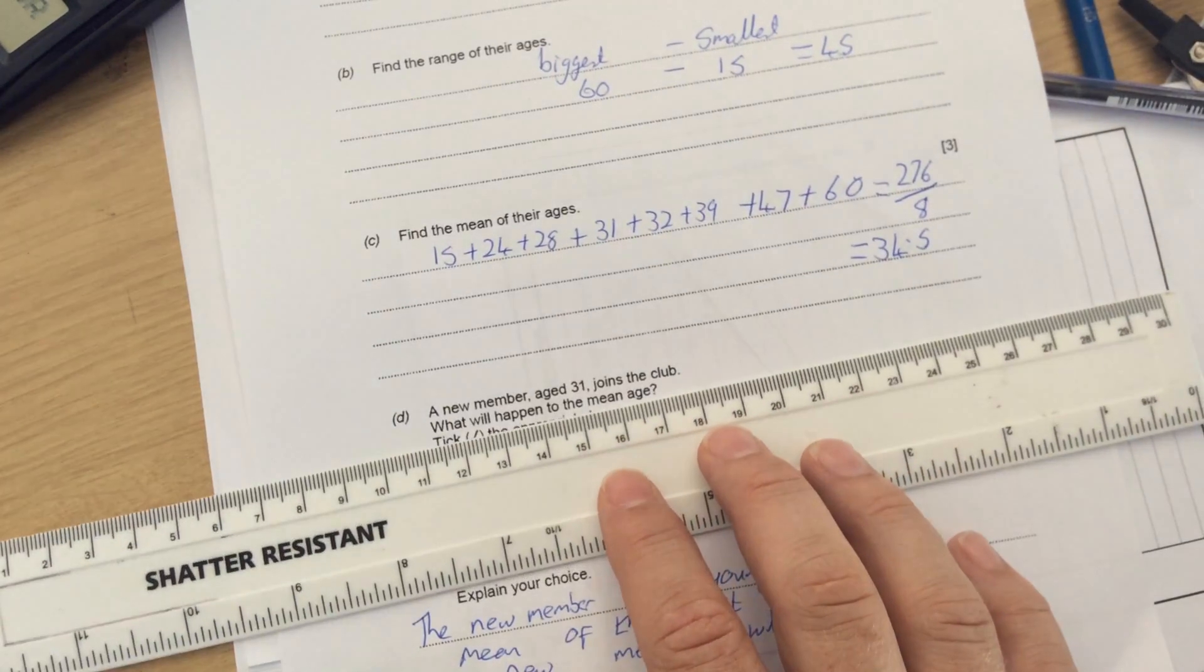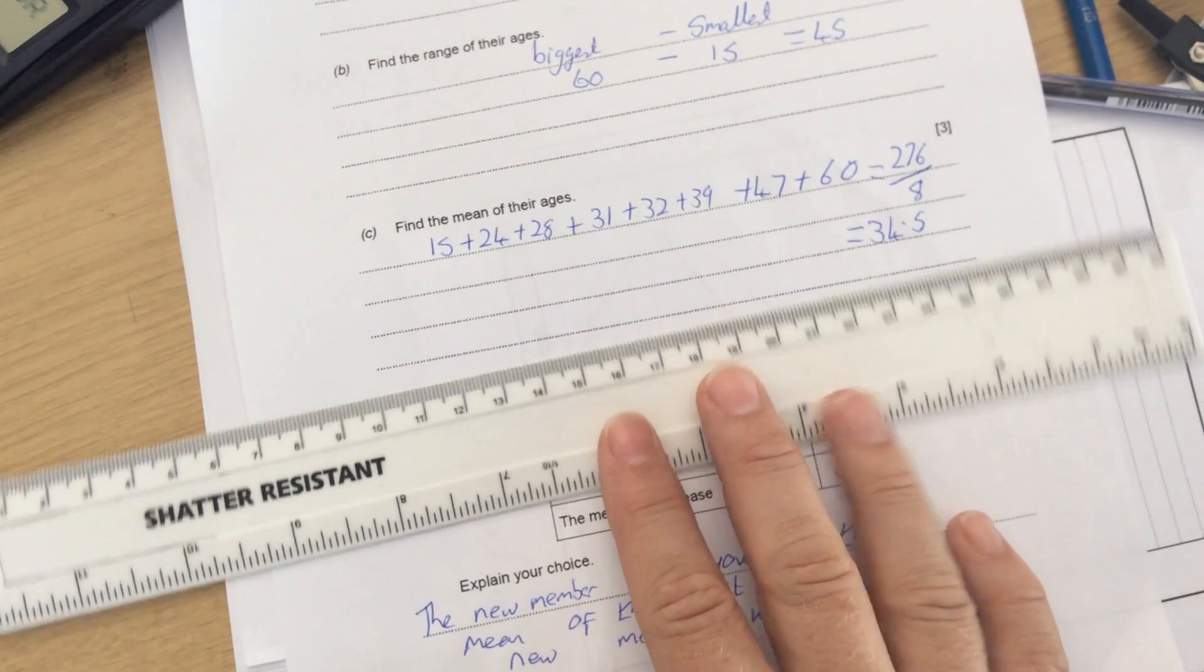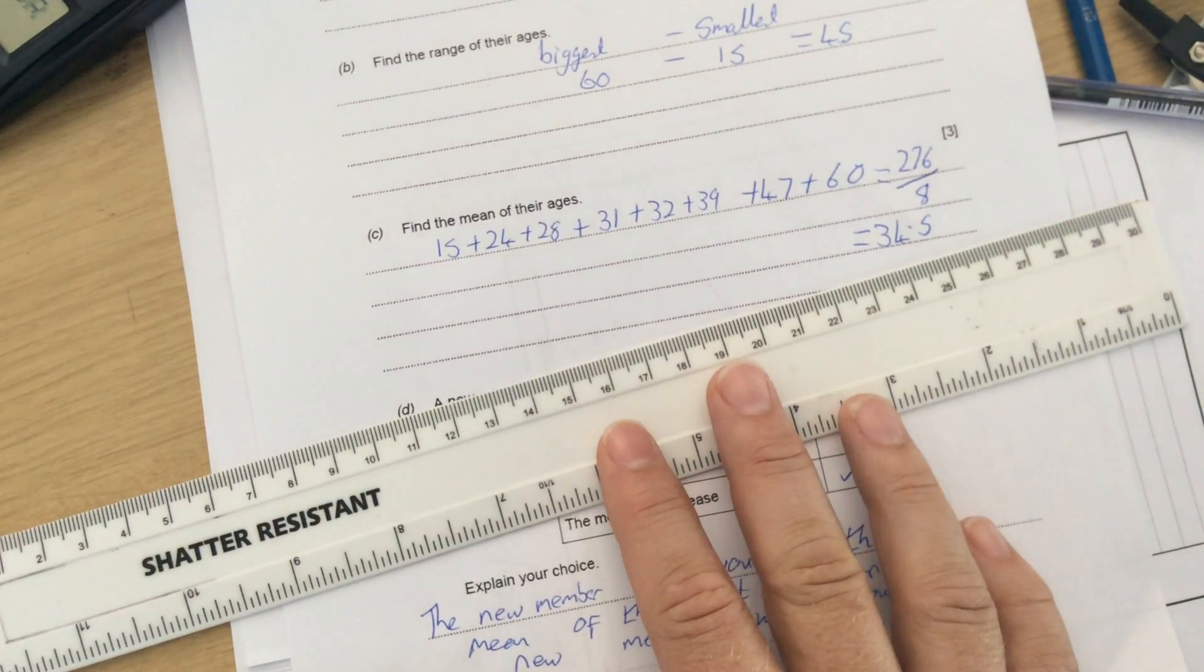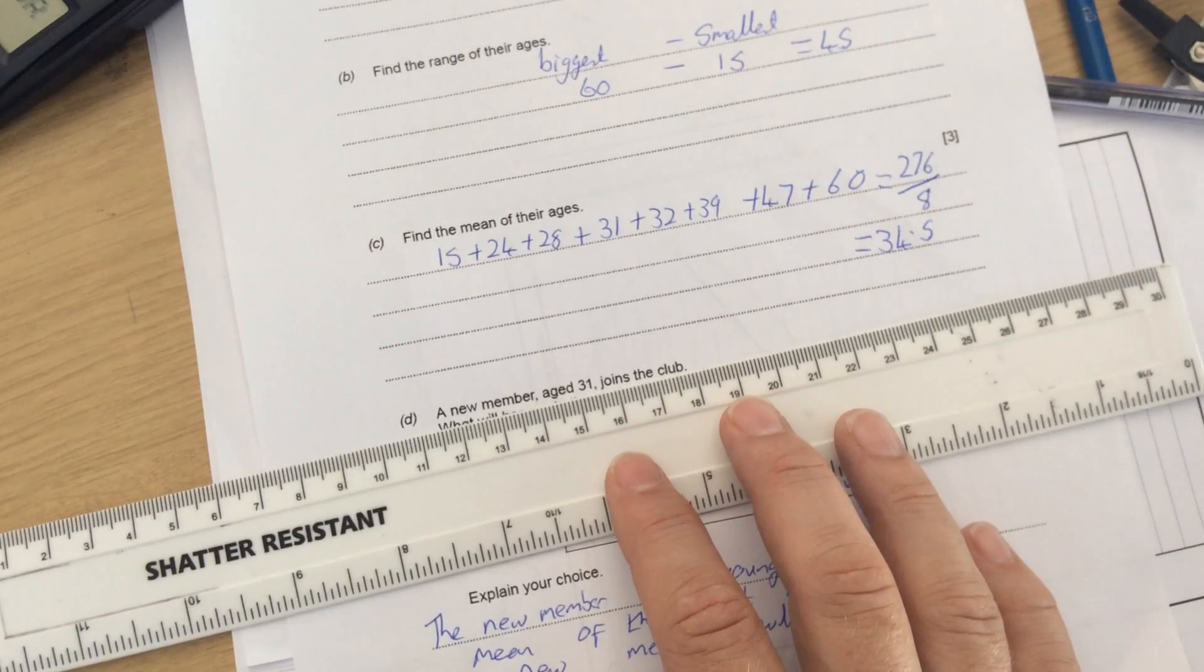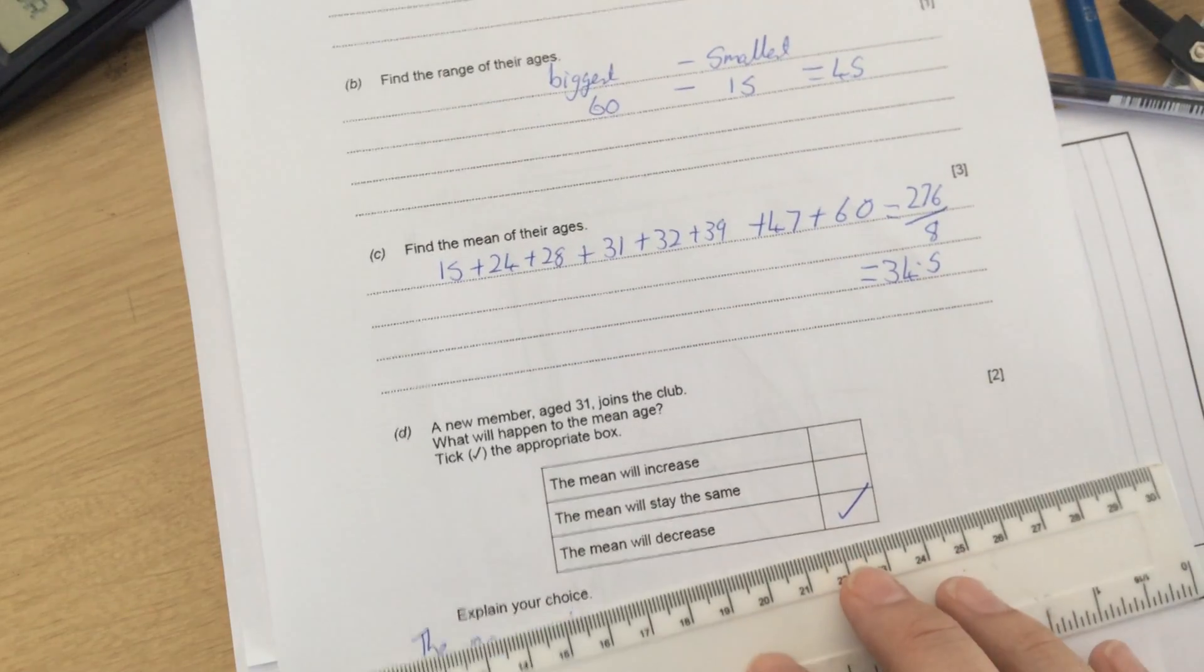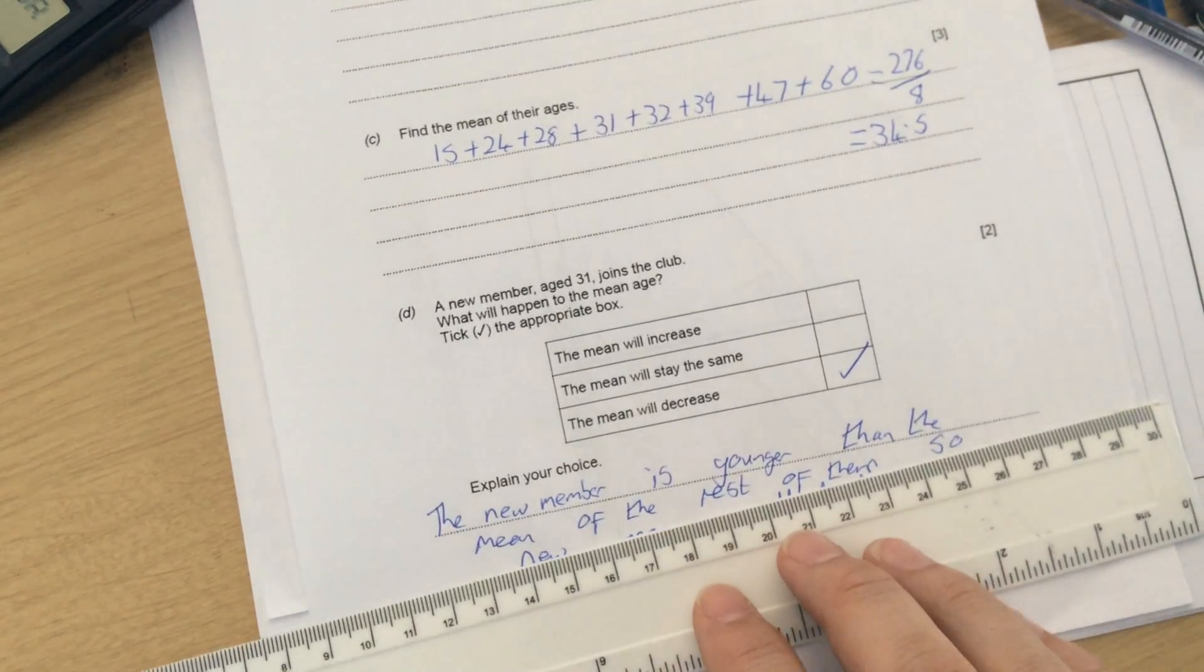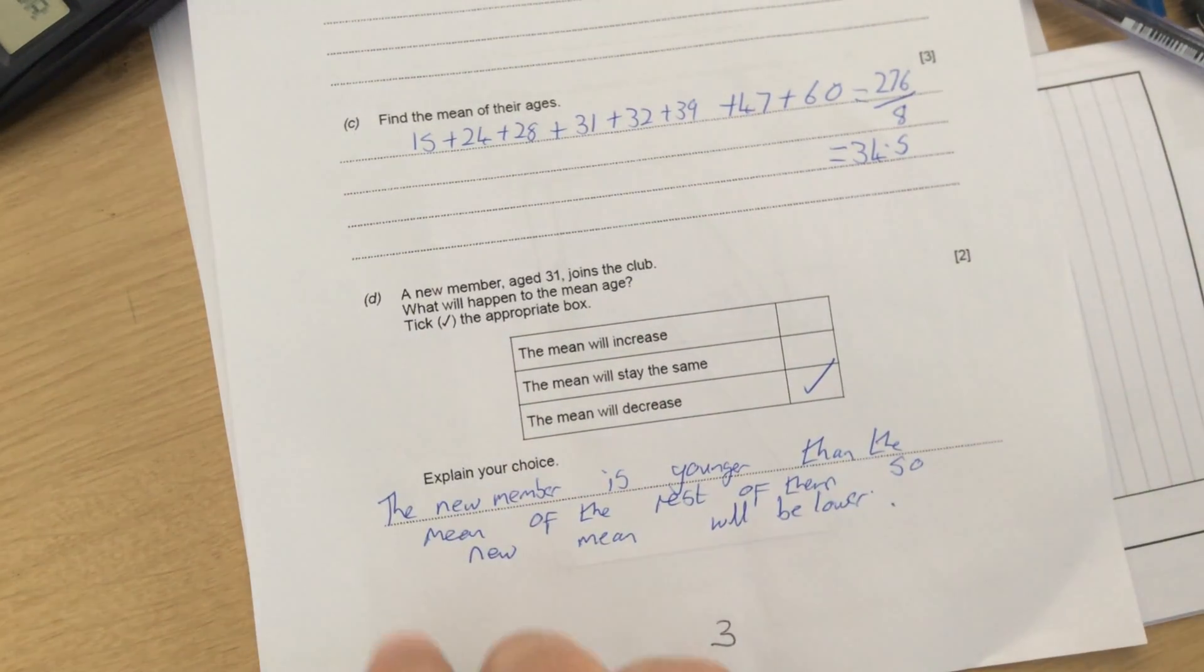A new member, age 31, joins the club. So they're younger than the average of 34.5. What will happen to the mean? So because the current mean is 34.5 and the new person is younger, that will bring the average age of the group down, so the mean will decrease. Explain your choice: a new member is younger than the mean of the rest of them, so the new mean will become lower.